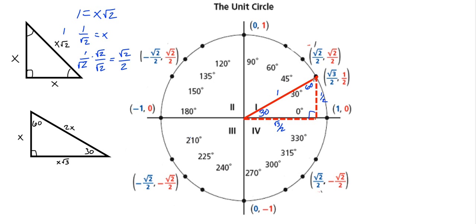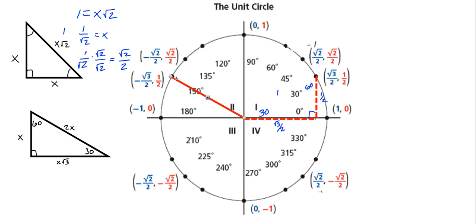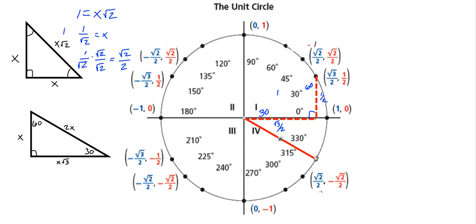Just like with the 45-45-90, we can take that same triangle into the other quadrants. In the second quadrant we get (-√3/2, 1/2). Drawing it down in the third quadrant, both X and Y are negative. And in the fourth quadrant we have a positive X value and negative Y value.